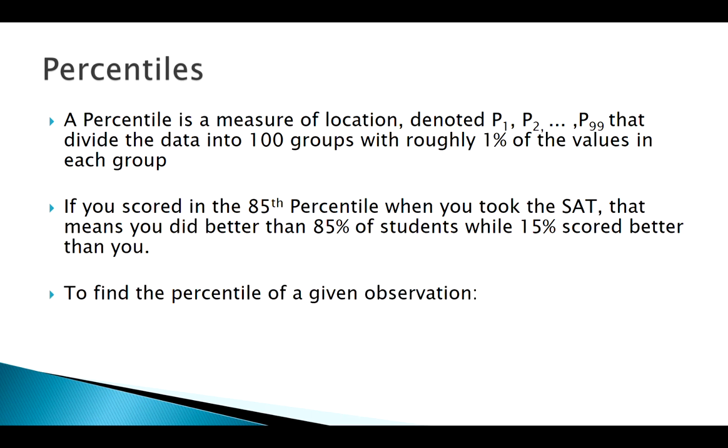So mathematically, to find this, all we need to know is the number of observations total that we have in our list and where our observation stands. Right, so take the number less than your observation, divide by the total, usually multiply by 100 to get our percentile there. Right, so this is when I have an observation that I'm interested in, in that list of my distribution, and I want to see what is its percentile.